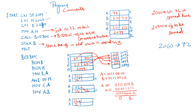MOV A,H loads the number 72 into the accumulator. Then we call the conversion routine BCD_BIN. After conversion, we store the output at the address stored in B, which is 2070H, and then halt the program.